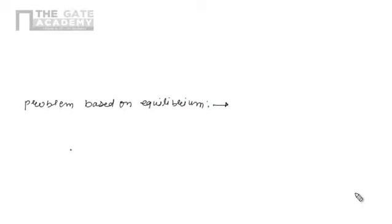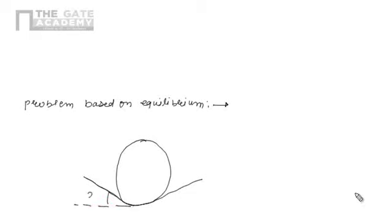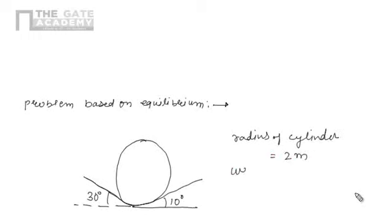Let's take a problem based on equilibrium. In this problem, a smooth cylinder of radius 2 meters is resting on a triangular groove as shown in the figure. The triangular groove makes angles of 30 degrees and 10 degrees respectively with the horizontal. The weight of the cylinder is given as 150 Newtons, and we are interested in finding the reactions at the contact points.